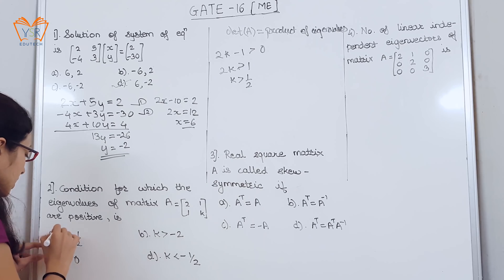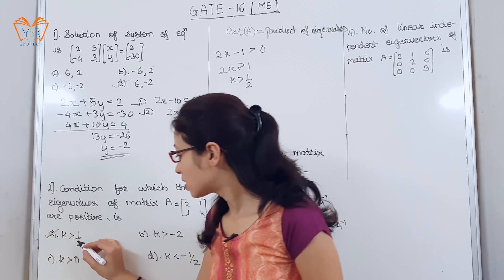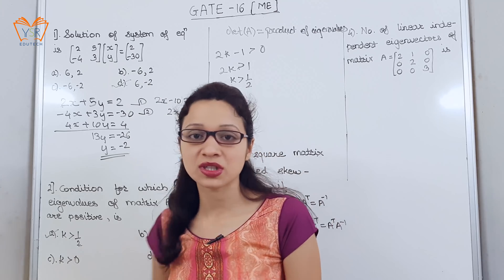So, the value of k is k should be greater than half. So, option A is k is greater than 1 by 2. Option A is correct.